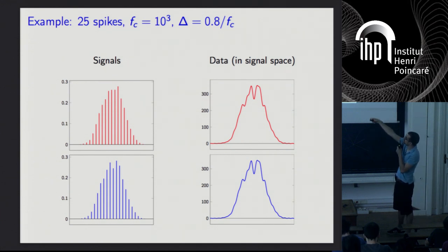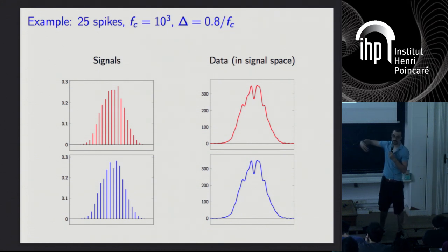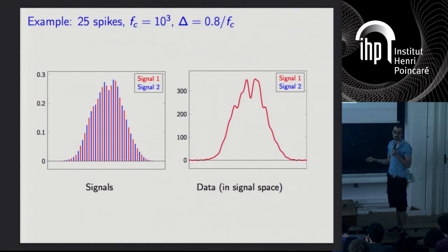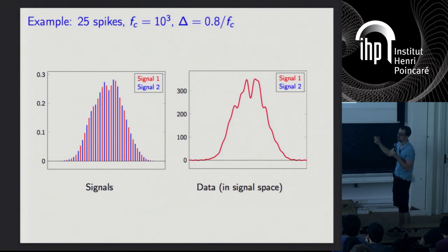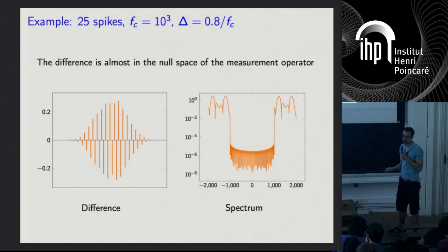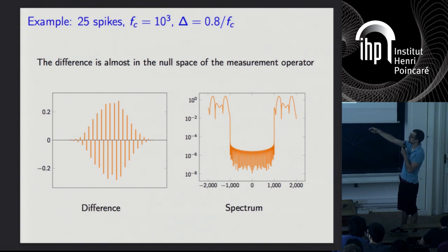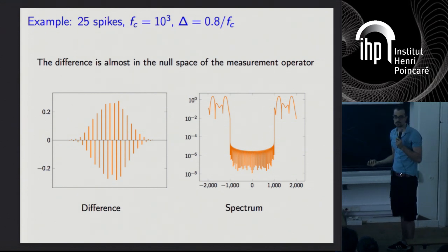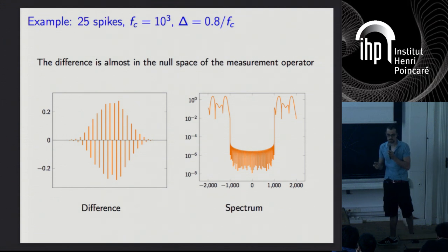To show an example: with two signals whose minimum separation is slightly smaller than 1/fc, we convolve them with this sinc and look at the data. Overlaid, the signals are completely different, but the data are almost exactly the same. This happens because sparse signals can be almost in the null space of the measurement operator: the difference between the two signals is almost high-pass, and what we measure is only the low-pass part of the spectrum up to frequency fc. So it's impossible to tell the two signals apart even with a little noise.